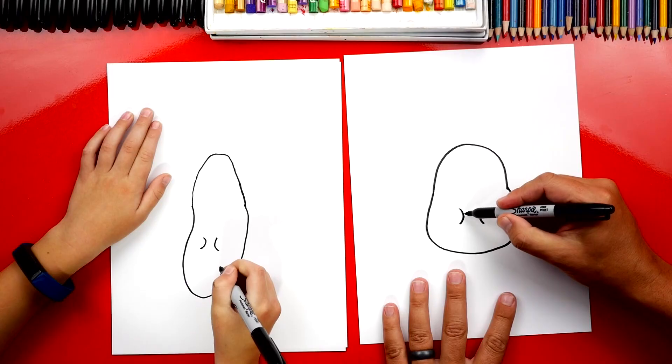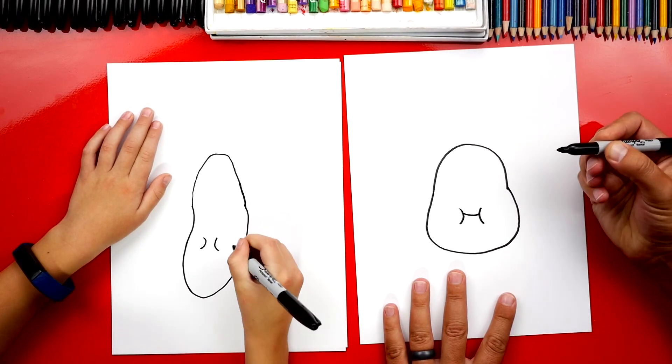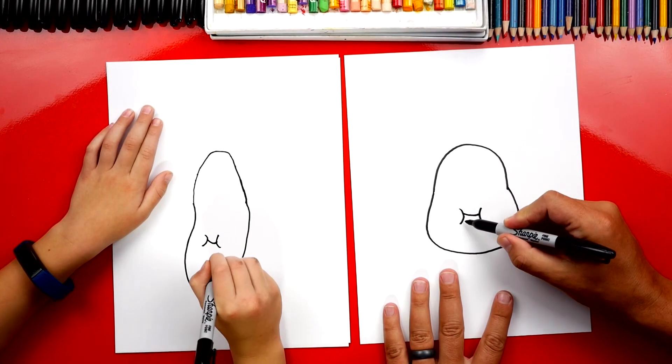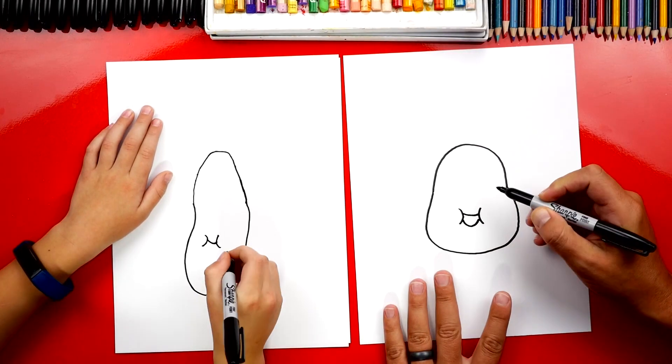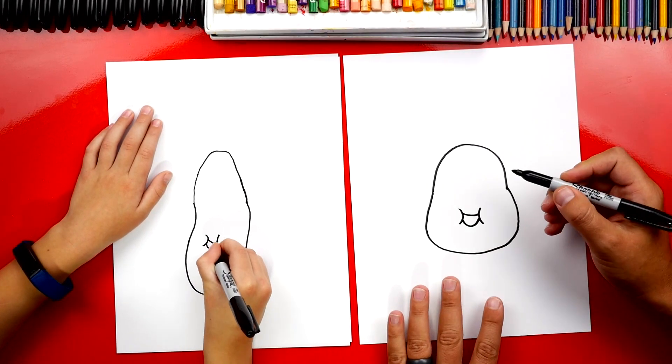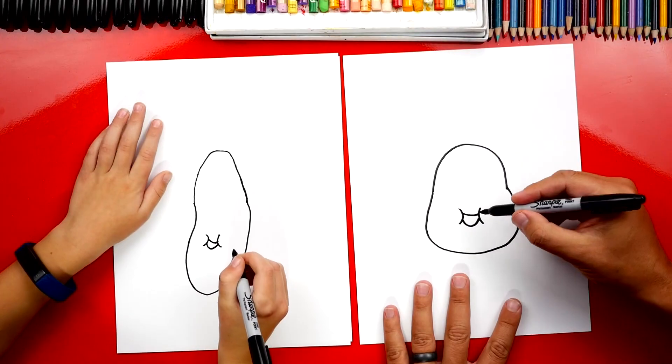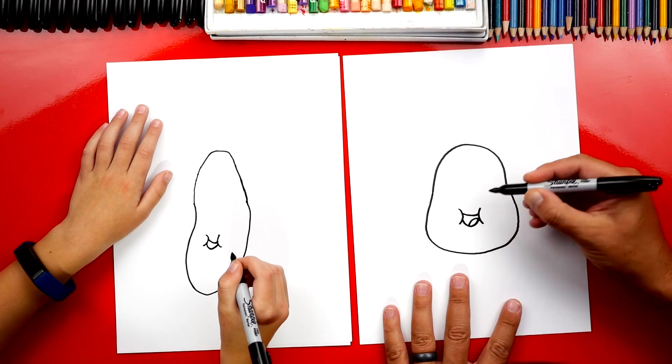And then let's draw. We're gonna draw happy so we're gonna draw a smile in between. Yep. And then we could draw another one underneath that one. I like his. Yeah I like his mouth. And then we could also draw a little tongue inside there.